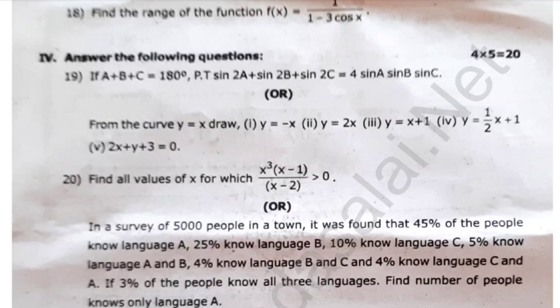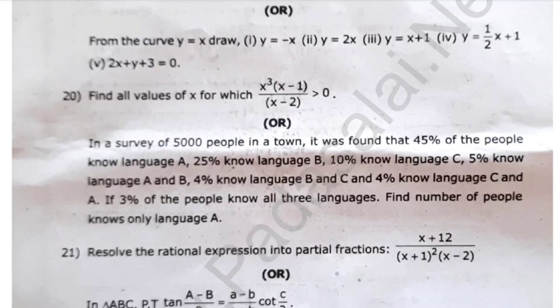Questions 19 and 20. In a survey of 5000 people in a town, it was found that 45% of people know language A, 20% know language B, 10% know both A and B, 4% know B and C, and 4% know C and A. If 3% know all 3 languages, find the number of people who know only language A, C, and all combinations.